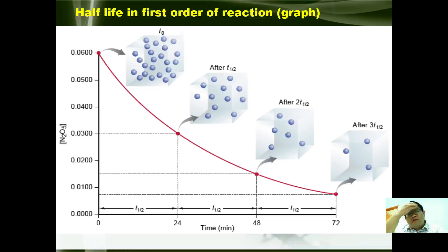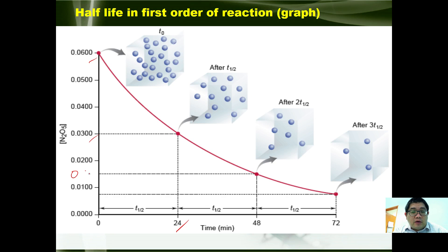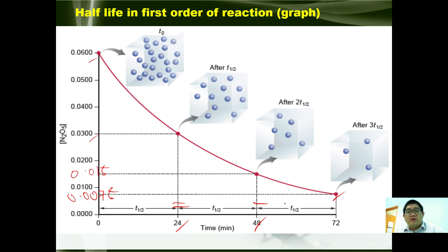When applied to a graph, if we start with a concentration of 0.06, the first half-life is at 0.03, given at 24 minutes. The second half-life is at 0.015, given at 48 minutes. The third half-life is 0.0075, given at 72 minutes. Since t₁/₂(first) equals t₁/₂(second) equals t₁/₂(third), we can conclude this is a first order reaction with respect to the concentration of A.